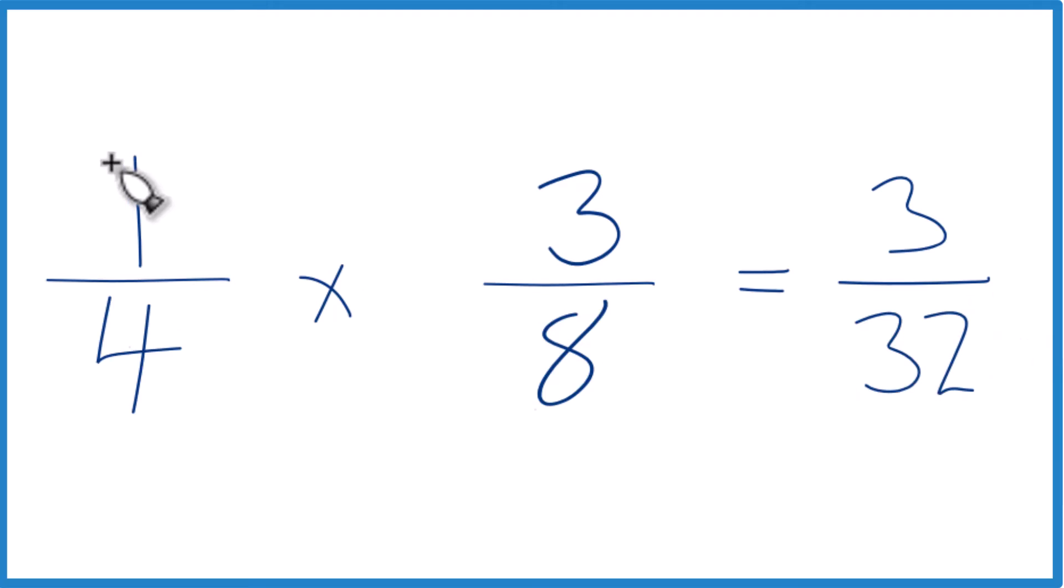We end up with one-fourth times three-eighths is three thirty-seconds. You could also say one-fourth of three-eighths, that's three thirty-seconds. And this is in simplest form. We can't reduce this down any further.